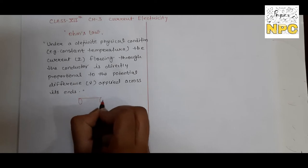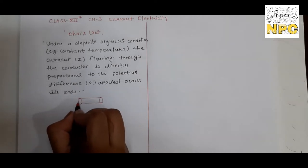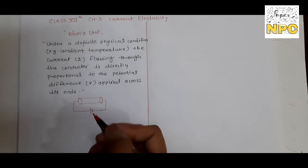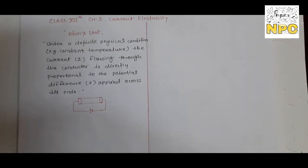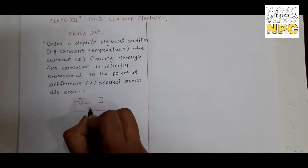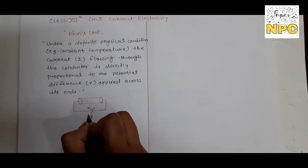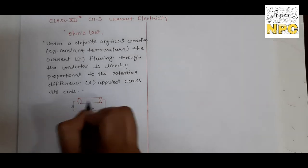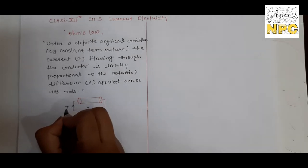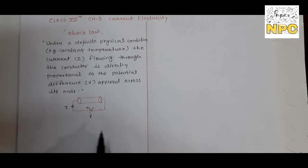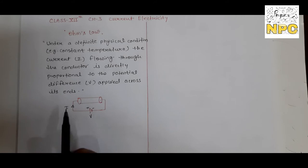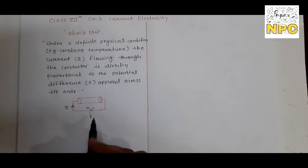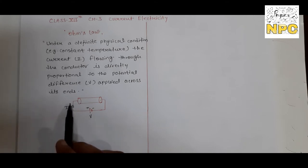Suppose V is a conductor. We have a conductor connected to a battery. The battery provides a potential difference V. The positive terminal is at higher potential and the other end is at lower potential. Current flows through this conductor in the direction of higher to lower potential, so current I flows here.